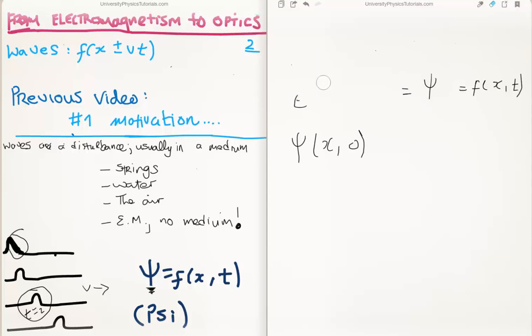Now we will start just deriving f is a function of x plus or minus v times t. So when the wave moves you can either move with the wave or look at it from a distance. So what we're going to do is consider what the wave looks like for two different people or two different observers.